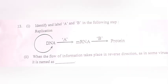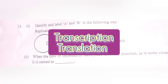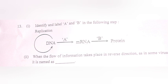Question 13. Part 1: Identify and label A and B in the following diagram. Answer: A — transcription; B — translation. Part 2: When the flow of information takes place in the reverse direction, as in some viruses, it is named as reverse transcription.